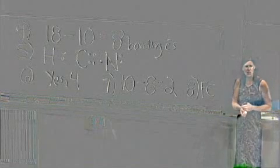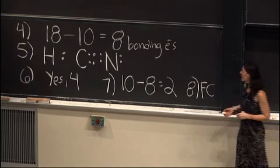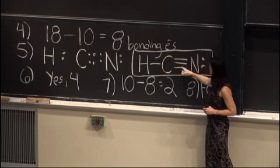Determining formal charge is a good way to check if your Lewis structure is correct. We haven't learned how to calculate formal charge yet — we'll learn it soon, so we won't do it for this molecule, but we'll go back and do it for other examples. We can also rewrite HCN in terms of bonds: every two electrons is a bond, so we have H, then a single bond line, then a triple bond to N, because we have three pairs of electrons. So the Lewis structure for HCN is H bonded to C, triple bonded to N, with a lone pair on the nitrogen.